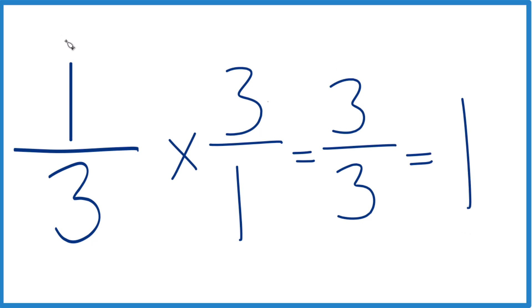So when we triple this one-third of a cup, we get one cup. And that's how you do it.